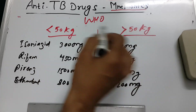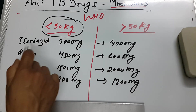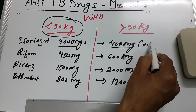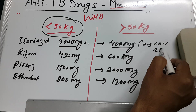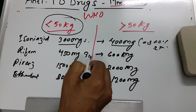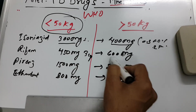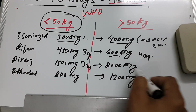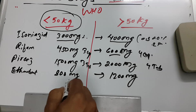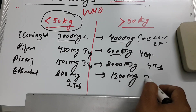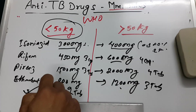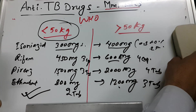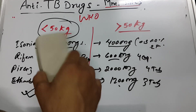To clarify in tablet terms: Isoniazid 300 mg = 1 tablet; 400 mg = 2 tablets (0.3 + 0.1). Rifampicin 450 mg = 3 capsules (each 150 mg); 600 mg = 4 capsules. Pyrazinamide 1500 mg = 3 tablets (each 500 mg); 2000 mg = 4 tablets. Ethambutol 800 mg = 2 tablets; 1200 mg = 3 tablets (each 400 mg). These are WHO-recommended doses.